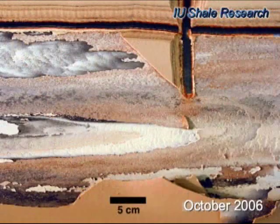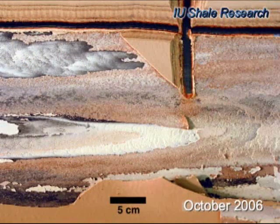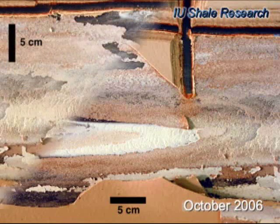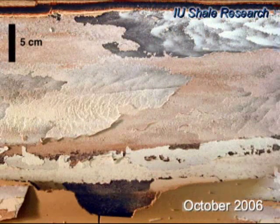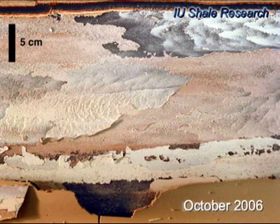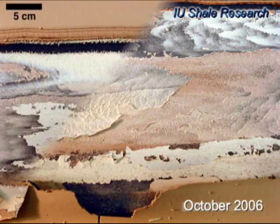Peeling of dry layers reveals additional detail. The clay between hematite markers shows curved ridges that are the fore-set laminae of compacted floccule ripples.